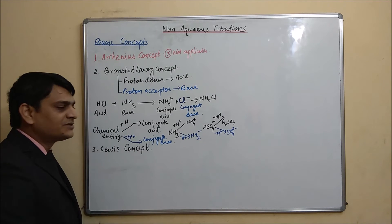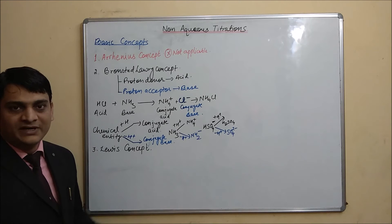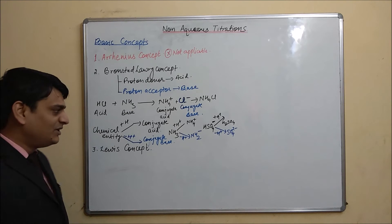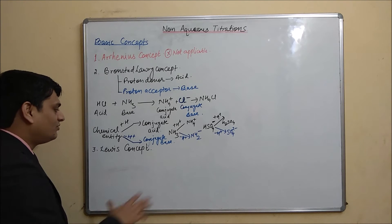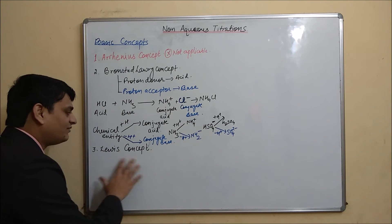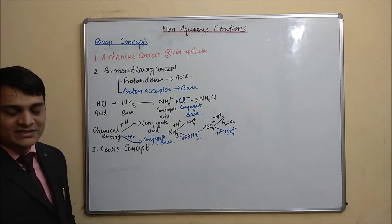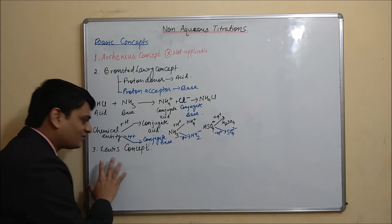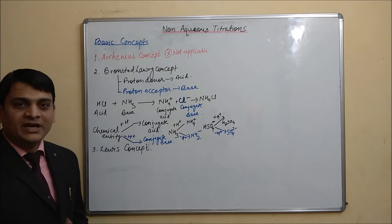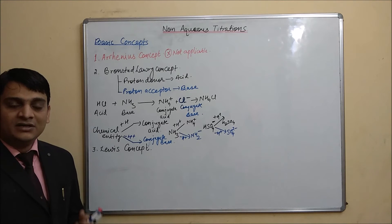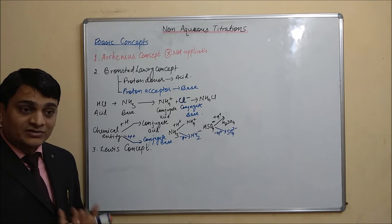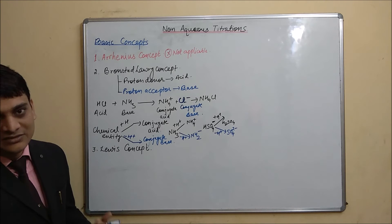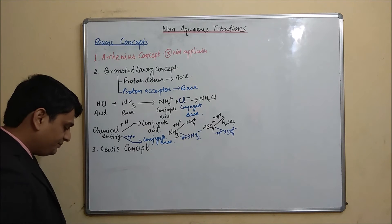All these concepts are used to define acids and bases. Now coming to the third one, which is the Lewis concept. According to the Lewis concept, acids are electron pair acceptors and bases are electron pair donors.